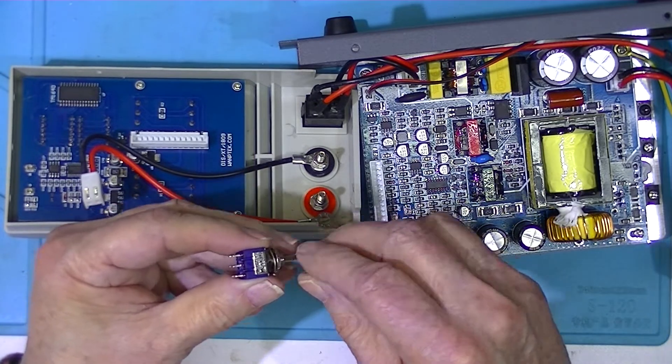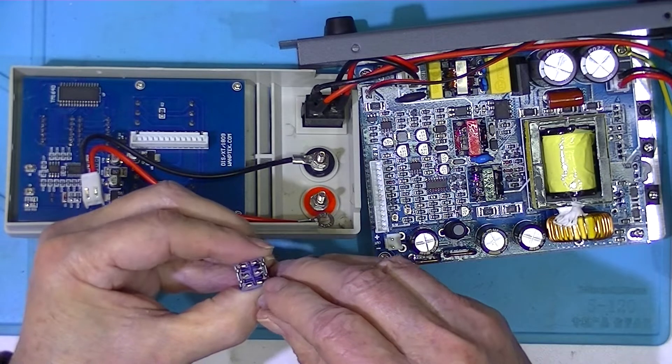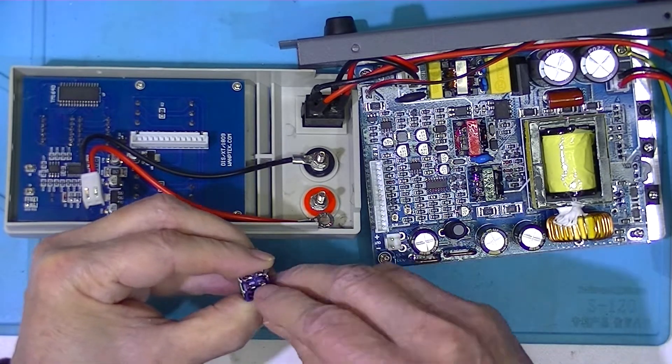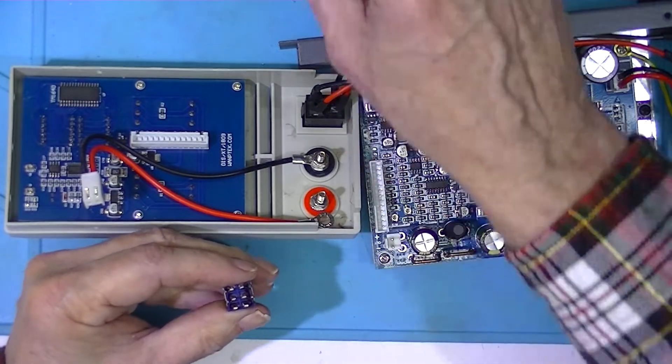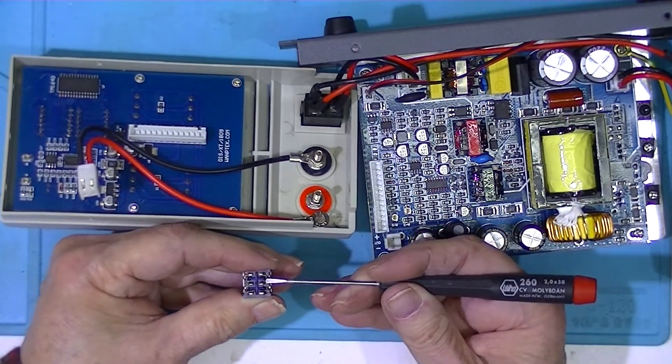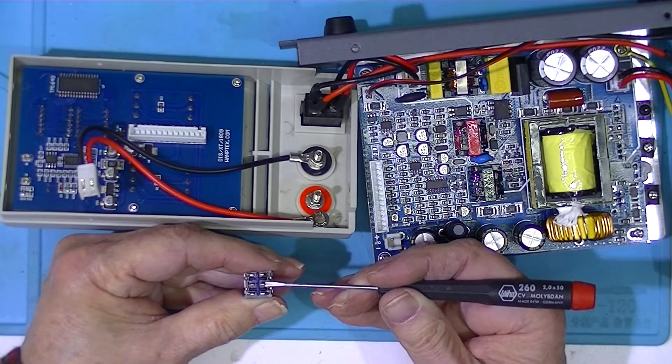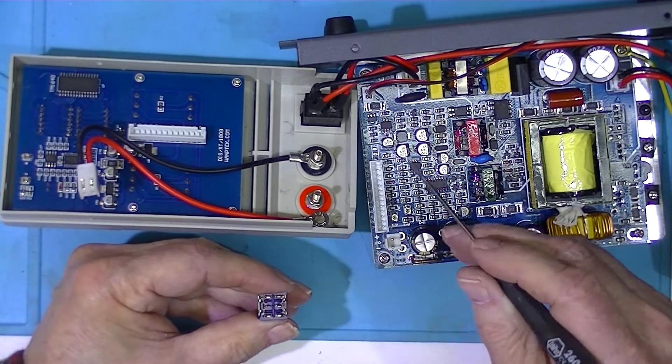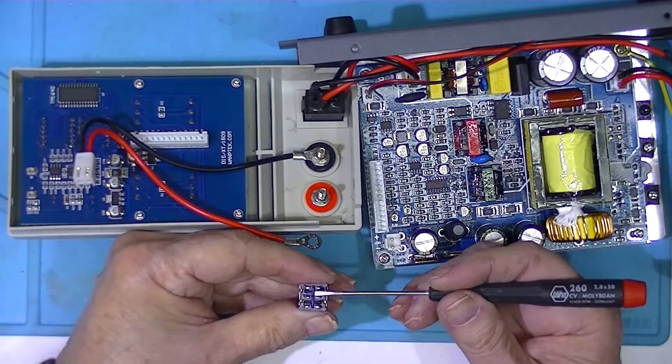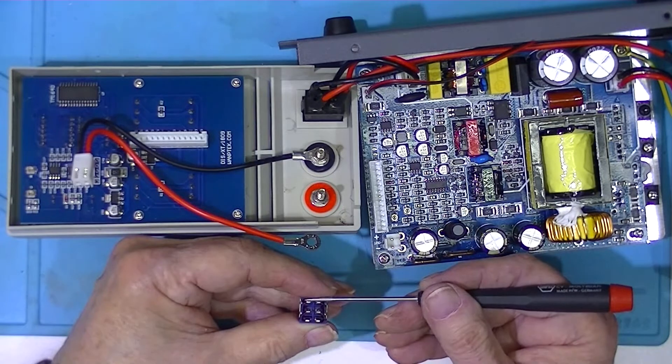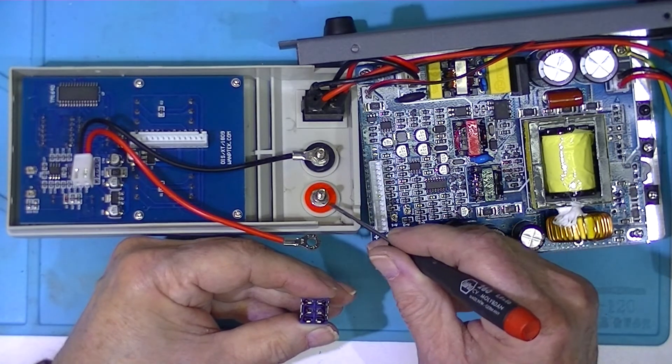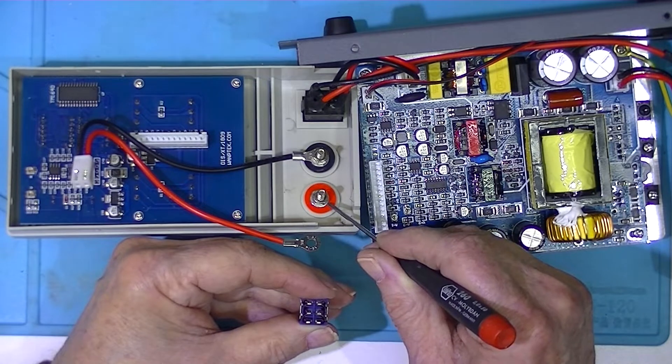I intend to hook the red lead - I'm going to short these two terminals together and connect the red lead to the center. The power lead from the power supply that I've got disconnected here, I'll hook the red lead here. I'll then carry a short piece of red lead from here to the positive terminal of the load.